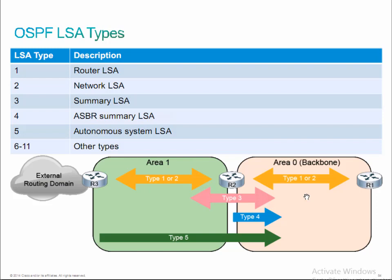Who generates a type 1 LSA? Everybody — every single router in OSPF generates a type 1 LSA. That type 1 LSA describes its local links. It's called a router LSA because it's generated by every router, and it describes the links attached to that particular router — essentially the most fundamental LSA, identifying to everybody else the networks I'm attached to — my connected routes that are part of the OSPF process. Type 1 LSAs only propagate within the area and never pass through an area border router.